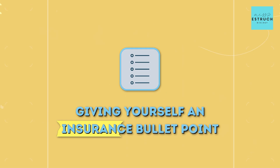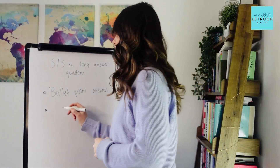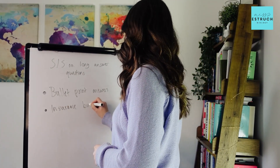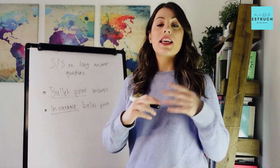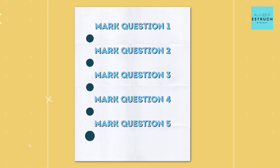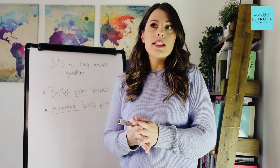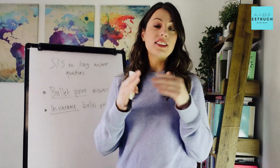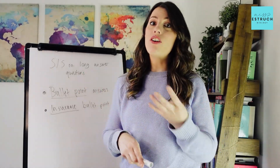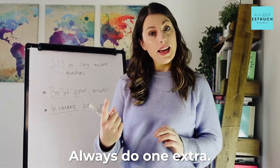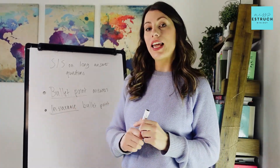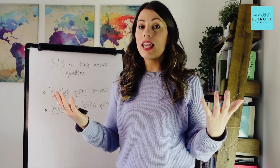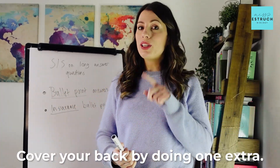Number two is giving yourself an insurance bullet point. What I mean by an insurance bullet point is: if it's a five mark question, do six bullet points so you've got one extra as insurance. What you might find is that two of your bullet points were actually worth one combined mark, meaning you've only got four points instead of five. So always do one extra than the question is worth, just in case two of them were a combined mark or one of them wasn't worth a mark — cover your back by doing one extra.